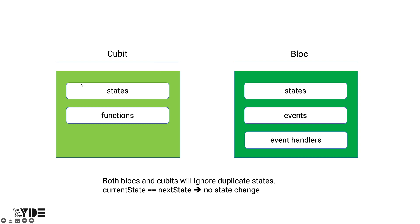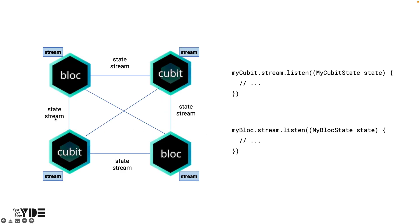To summarize: to make a Cubit, define the state and implement a function to handle the state. To create a Bloc, define a state and event and implement an event handler to handle the event and state. Note that both Bloc and Cubit ignore consecutive overlapping states — if the current state is equal to the next state, then no state change occurs. However, there are cases where a different state is needed to create a new state. In this case, how can we know the value of another state?